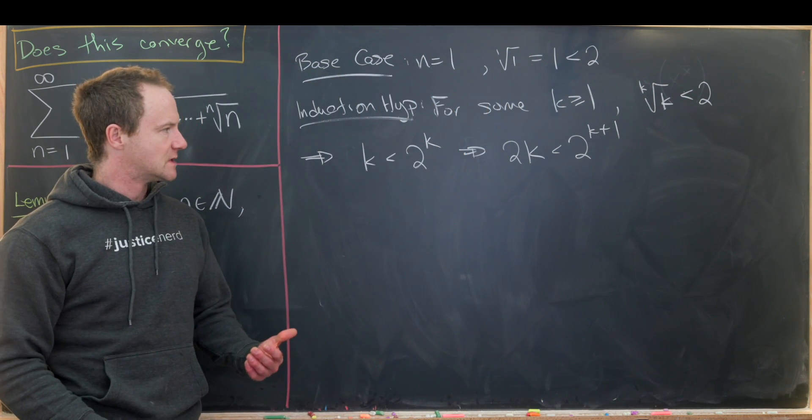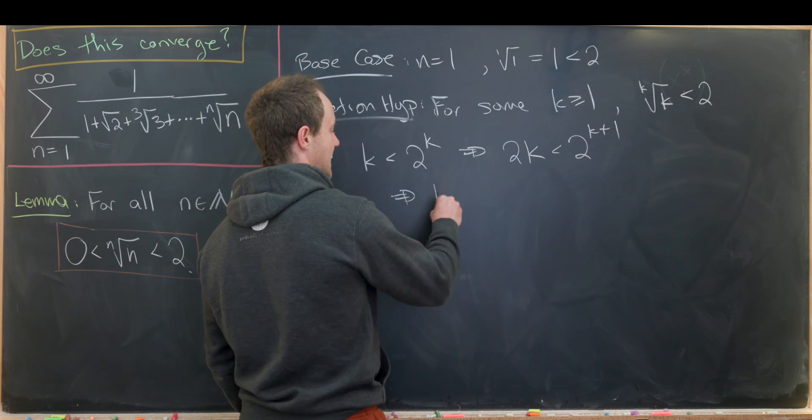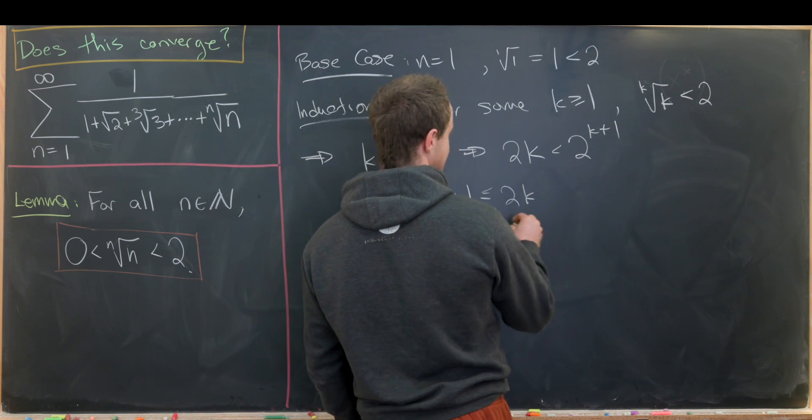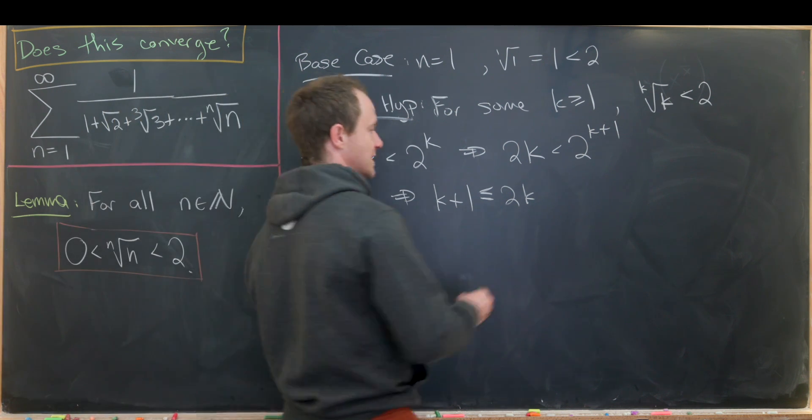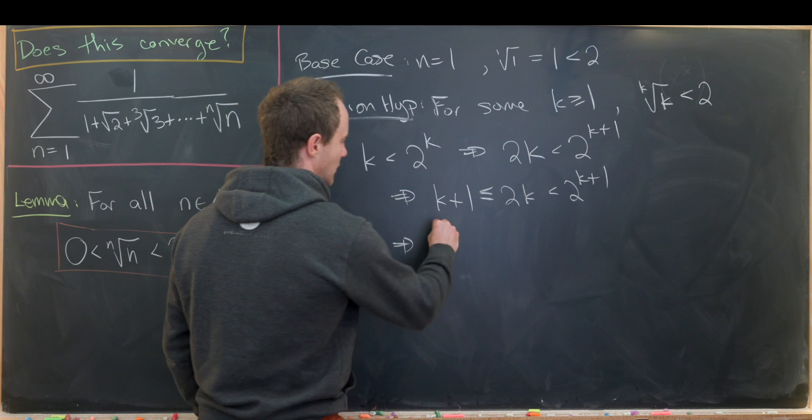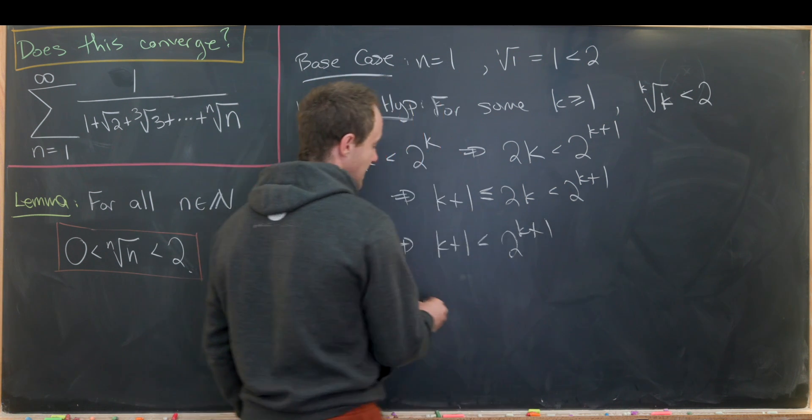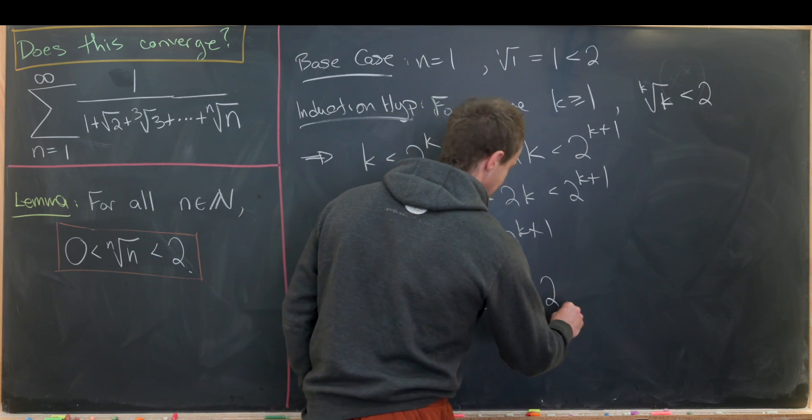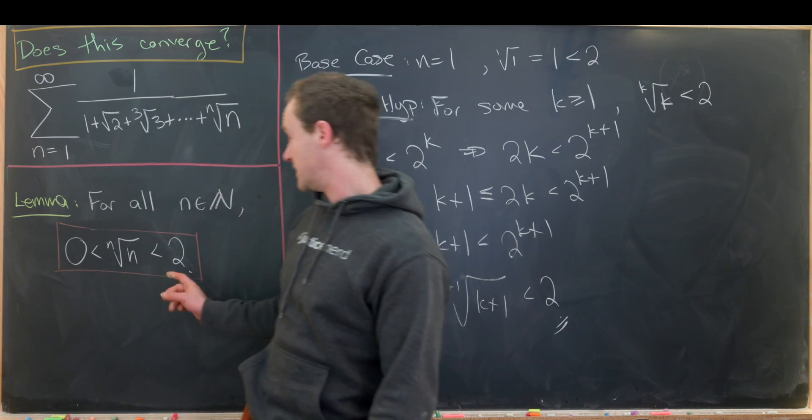Okay, but the cool thing about this is we can sneak a k plus 1 to the left of 2 times k. So we have k plus 1 is less than or equal to 2 times k. Well, it's only equal one time. Maybe post in the comments what that one time is, which is less than 2 to the k plus 1. We can forget about the middle right there, and we have k plus 1 is less than 2 to the k plus 1. And then taking the root of both sides, we get the k plus first root of k plus 1 is less than 2, which is exactly what we needed to finish the proof of this lemma.